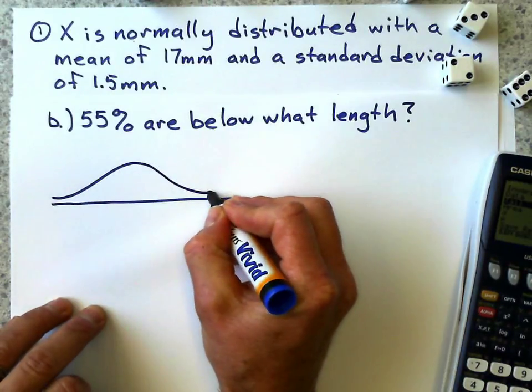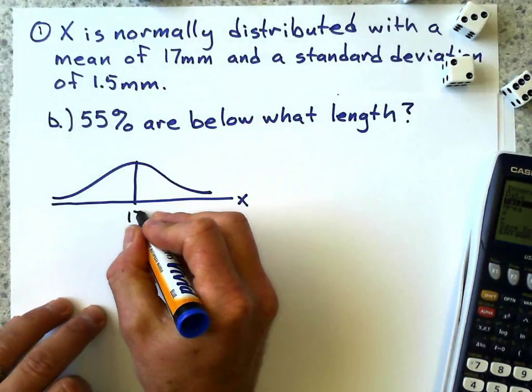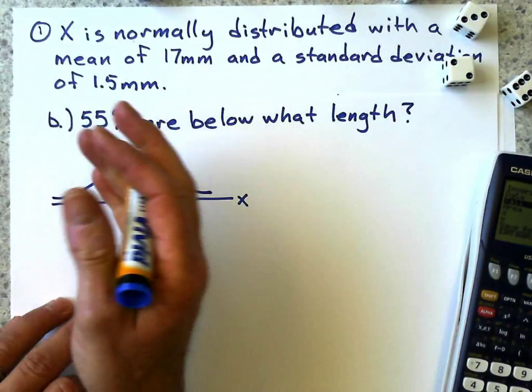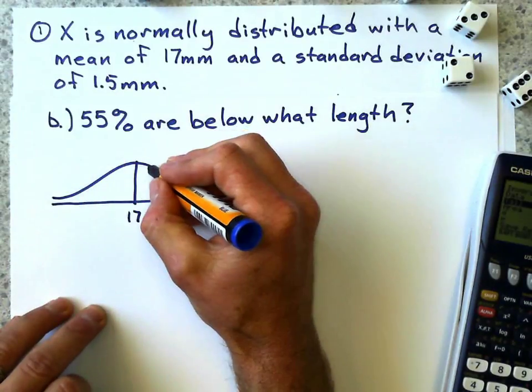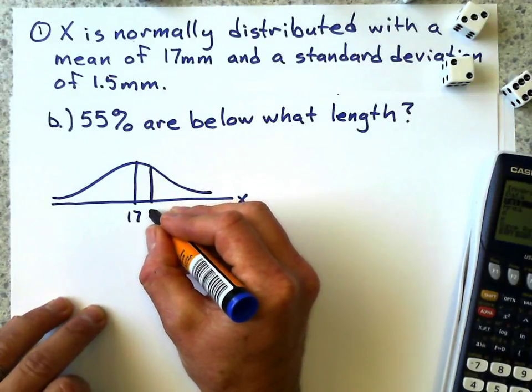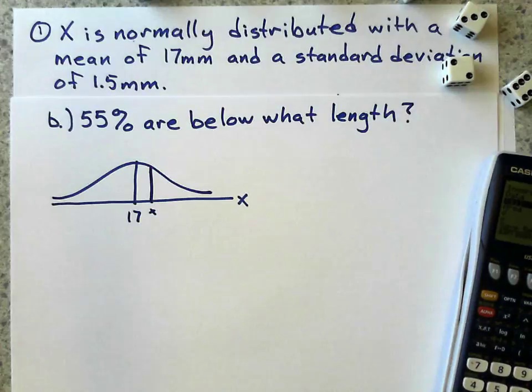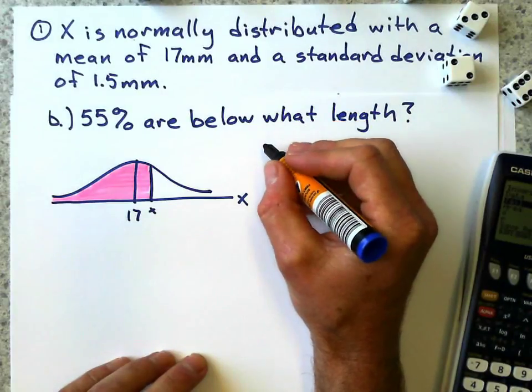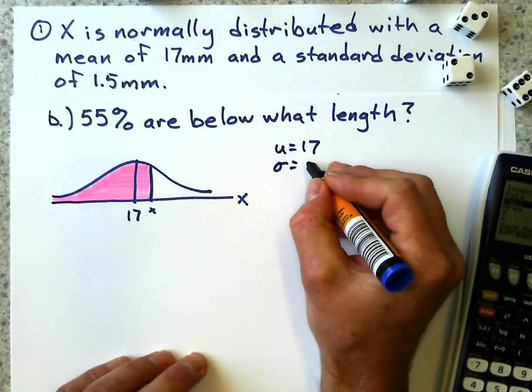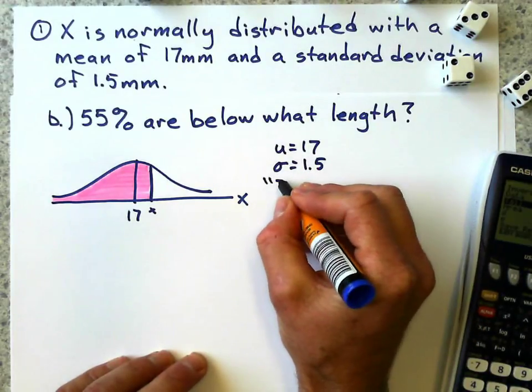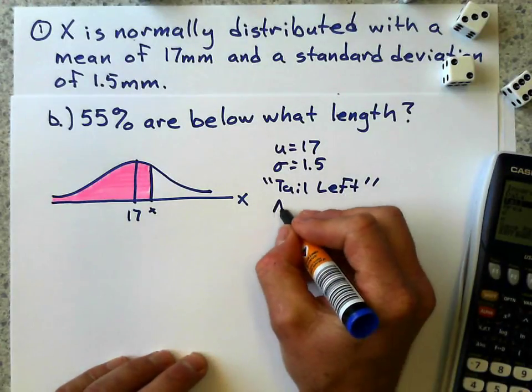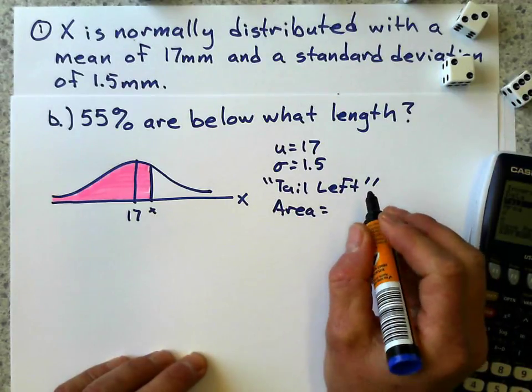There's our normal curve. Our mean, I'll use the same mean, 17. Now, 55%, that's going to be more than half the curve, and it's below. So it's going to be a tail left, but it's more than 50%, which means it's going to be somewhere over here, where my x is. And it's going to be that side shaded, the left side. So we've got a mean of 17, standard deviation of 1.5, tail left, and the area is 0.55.